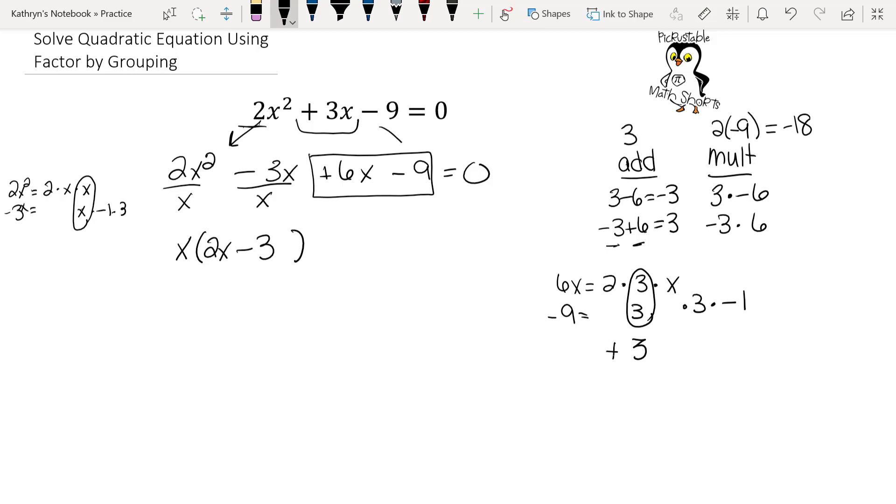Now notice it's a positive 3, so we're going to write plus 3. I'm going to erase my box. And now we're going to divide each piece by our greatest common factor, which is 3. So 6x divided by 3 is 2x. Negative 9 divided by 3 is negative 3.